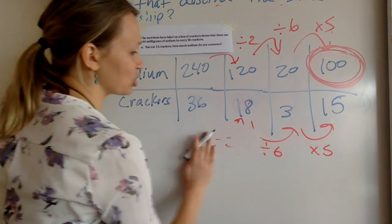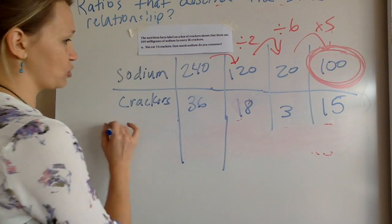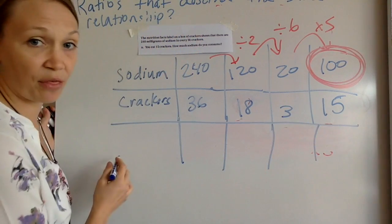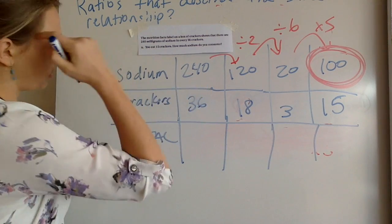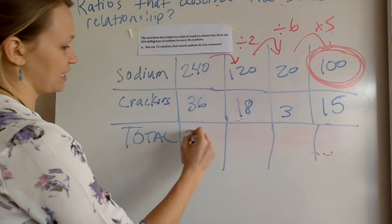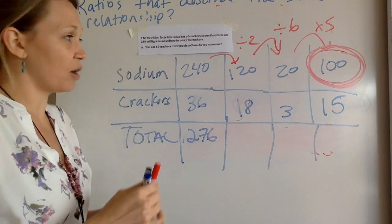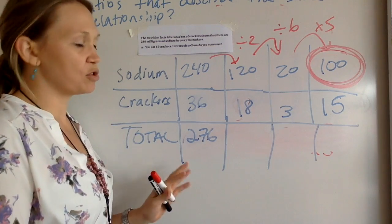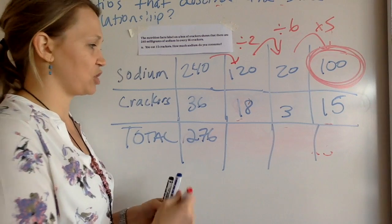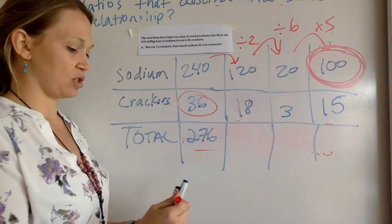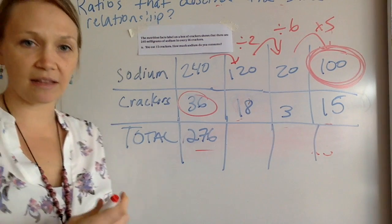In addition, the problem actually might ask you for the total. They might use the total and the information they gave you, in which case we would just make a third row here and write total. So in this ratio, the total is 240 plus 36. This problem doesn't make much sense, but I'm just giving you a for instance. And the question might ask, how many crackers would there be when the total is 276? So you do a bunch of ratios and you find, oh, okay, there's 36 crackers when the total is 276. So sometimes your ratio table might have three rows depending on the problem.